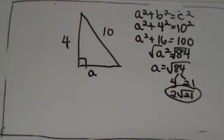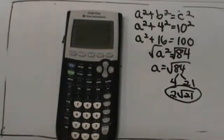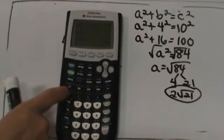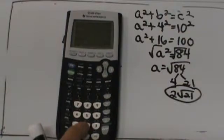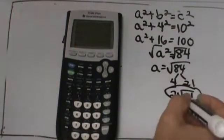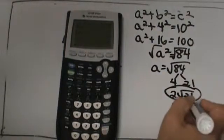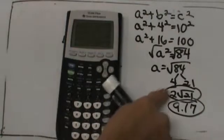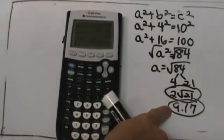You can also grab your calculator and you can take the square root, which is 2nd function, and the x squared, at 84, and the decimal answer is 9.17. So you need to be comfortable with both simplifying as a radical and decimal forms.